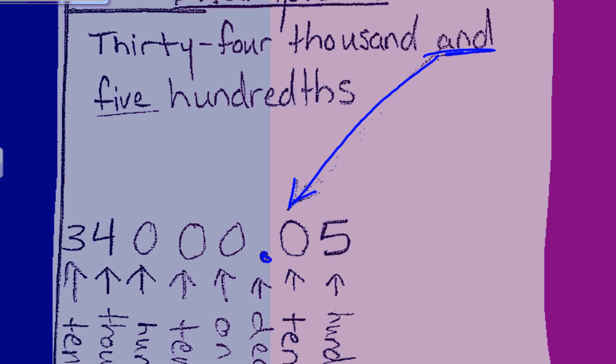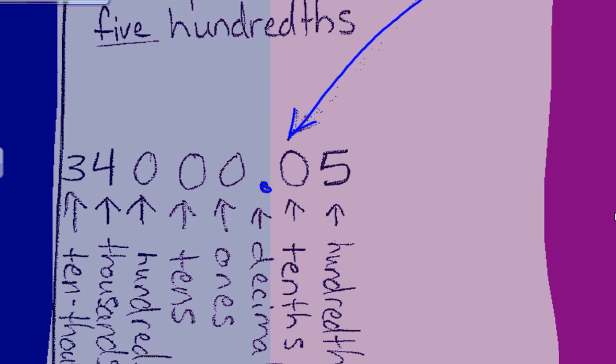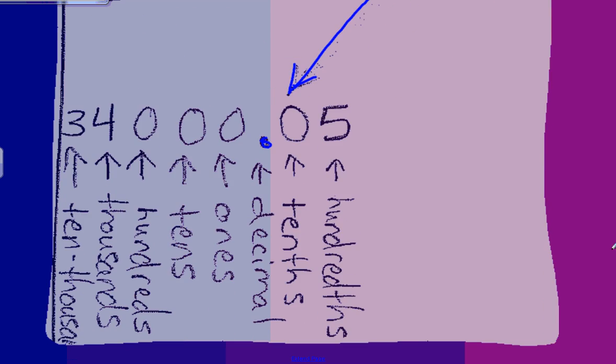Then we look for the words in front of the decimal, and we see thirty-four thousand. That means that the four should be in the thousandths place.